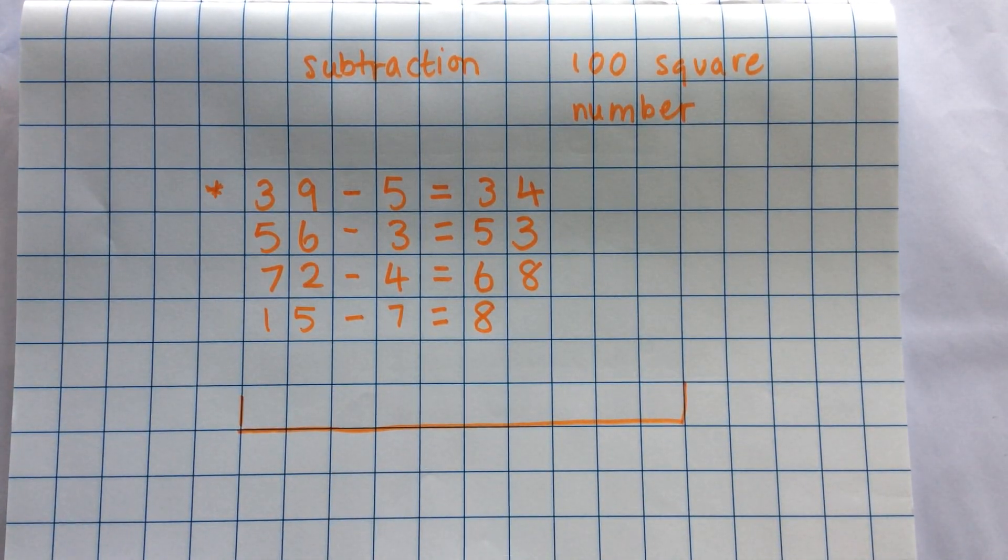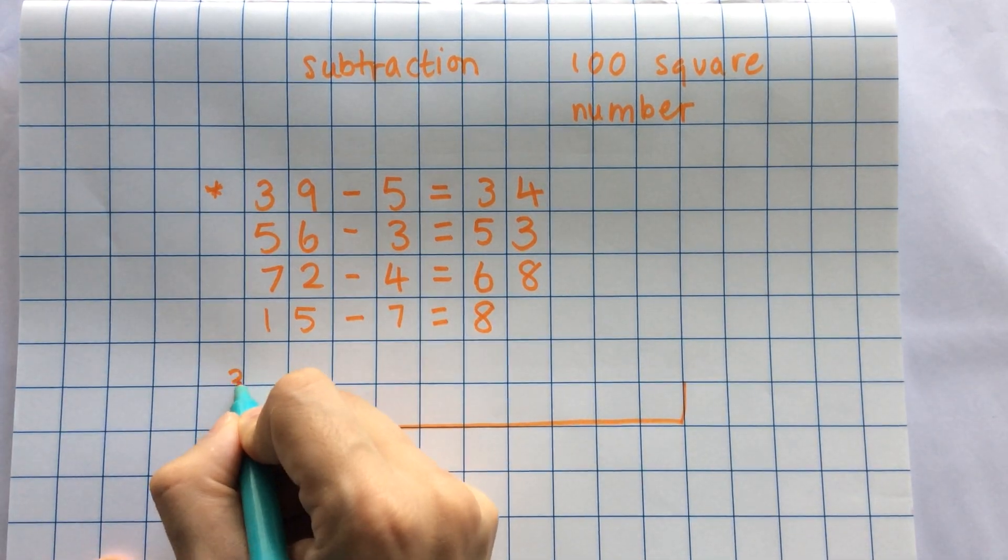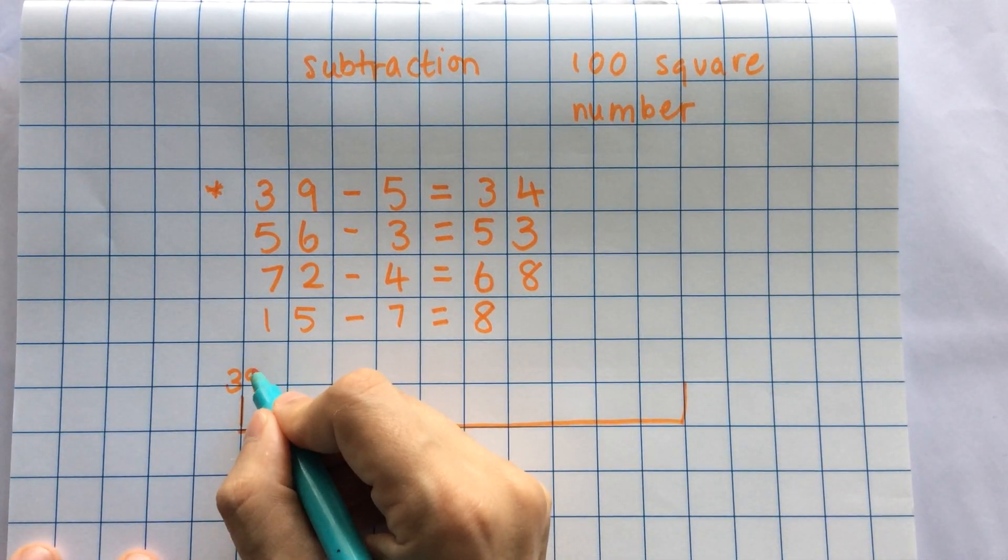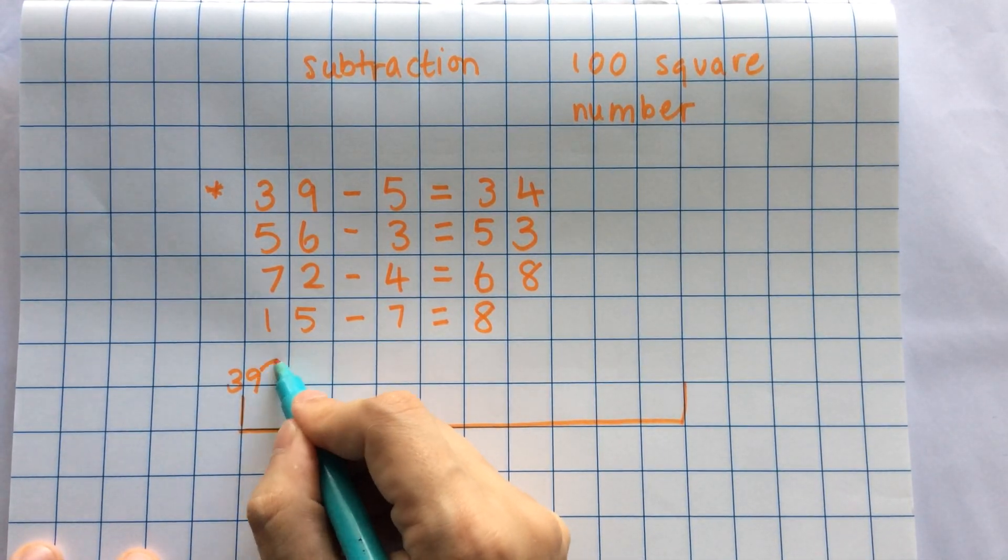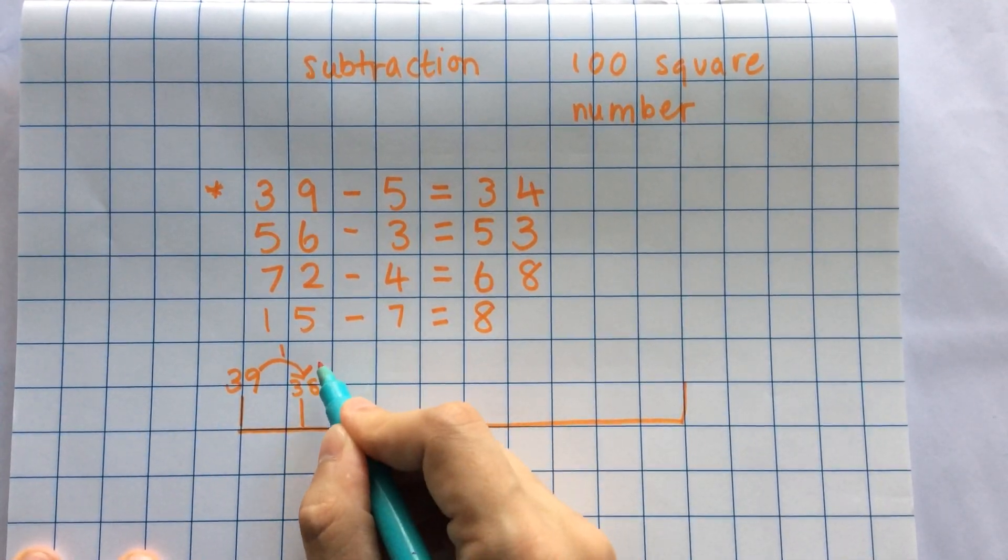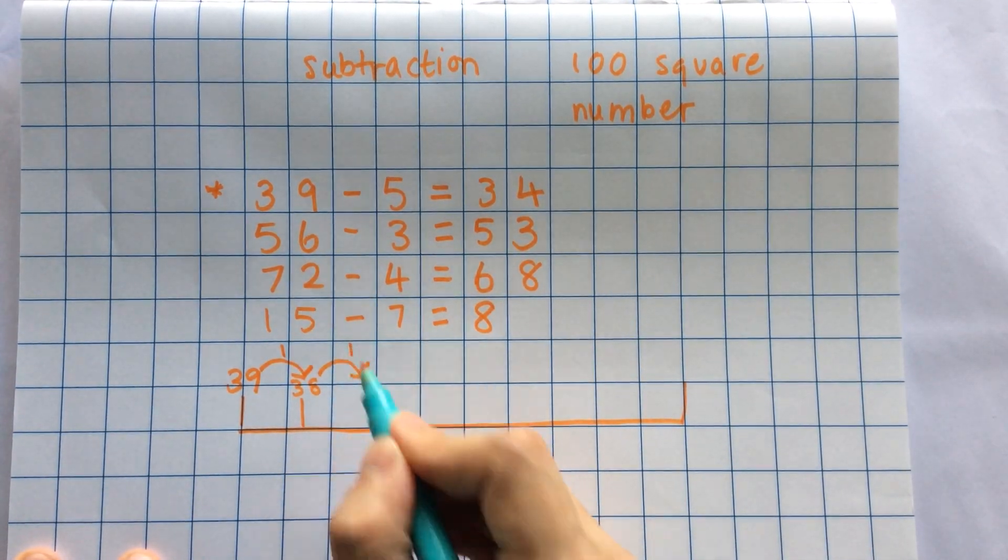I'm starting at 39. I've got a small number, so I'm just going to count back in 1s. And I need to jump back 5 times. There's one jump, 38. There's another jump, 37.